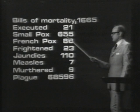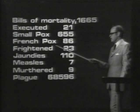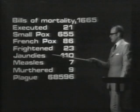21 people were executed, 86 died from French pox, 23 died from fright, surprisingly only 9 were murdered, and the figure that interests me in particular are the 110 cases which died from jaundice. Of course, this does not necessarily imply that the cause of death was viral hepatitis, but jaundice as a disease entity has been recognized for many years.